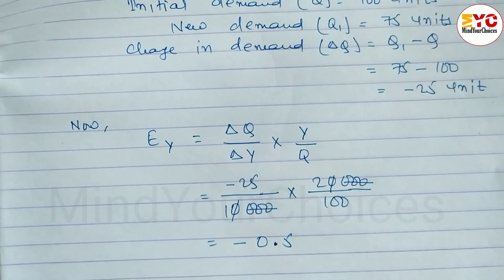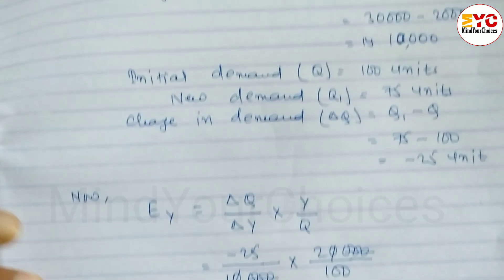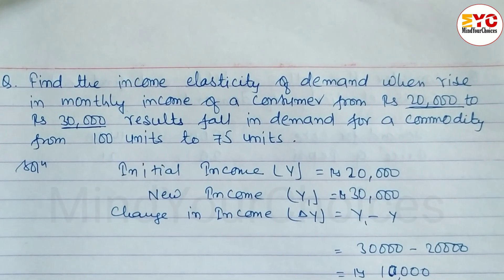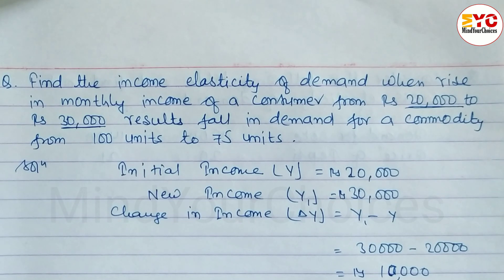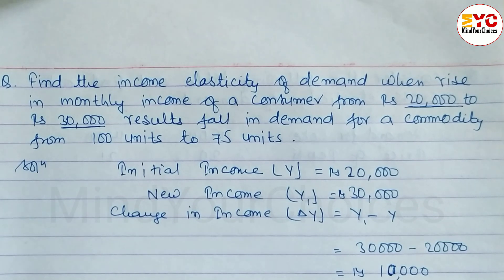So the income elasticity of demand is equal to minus 0.5. Hope you understand how to find income elasticity of demand, taken from elasticity of demand and supply. If you understand, please hit the like button. If you are new to my channel, please subscribe and share with your friends. Thanks for watching till the last — keep supporting and keep sharing.